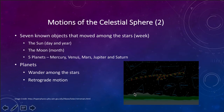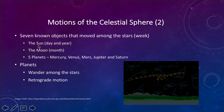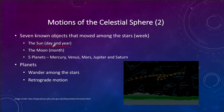There are also seven objects that were known to move among the stars. The sun gives us the day and the year — we've already talked about that. The motion of the moon gives us the month of about 30 days.